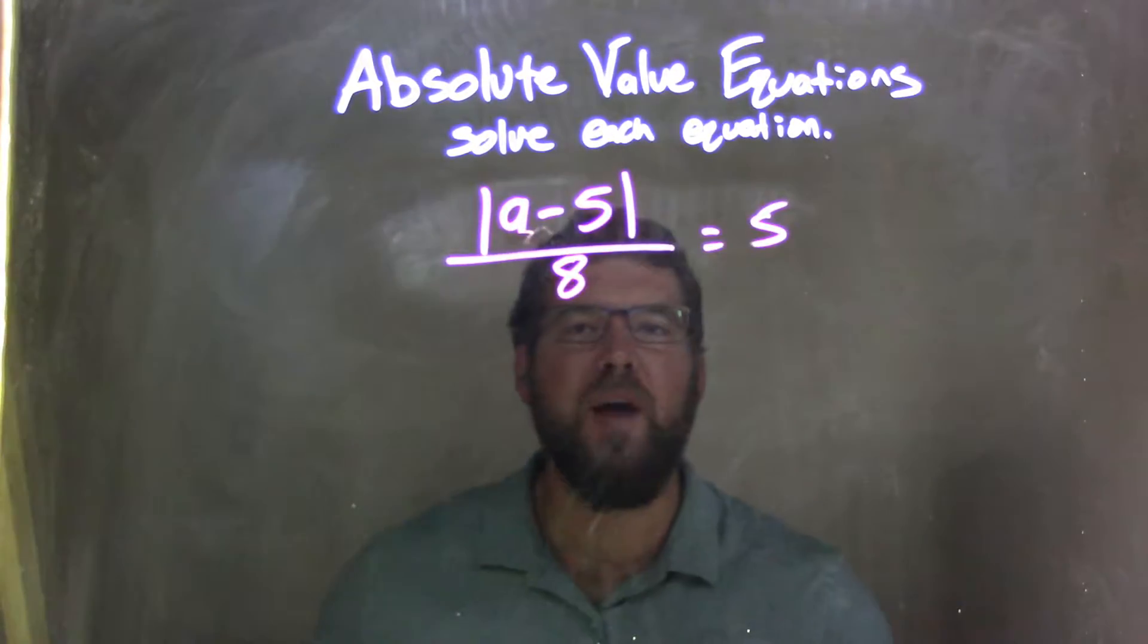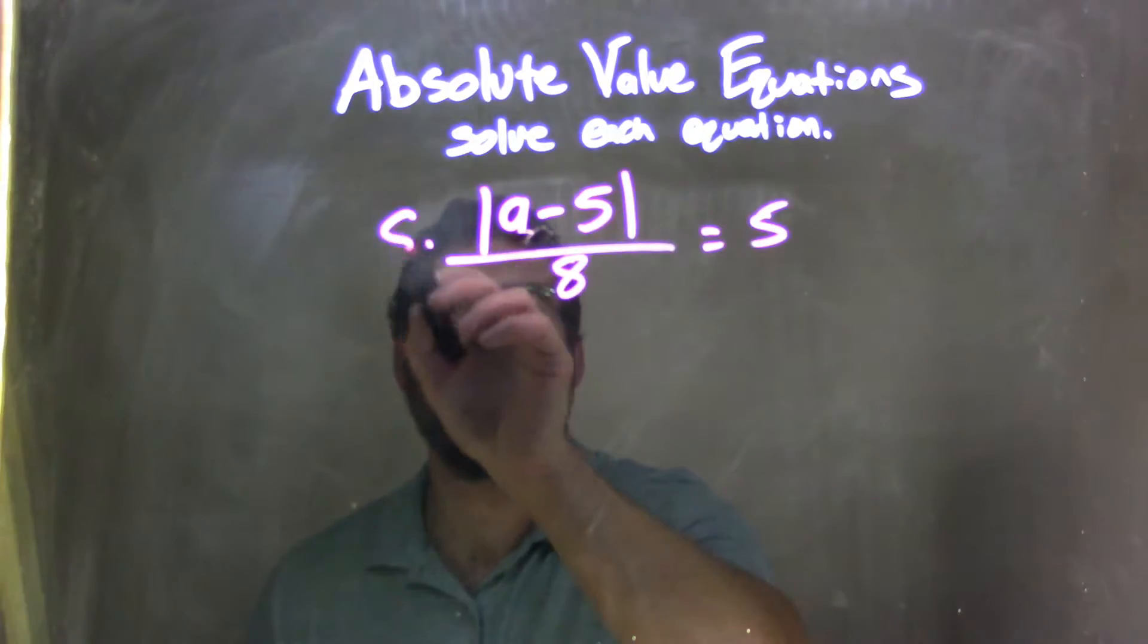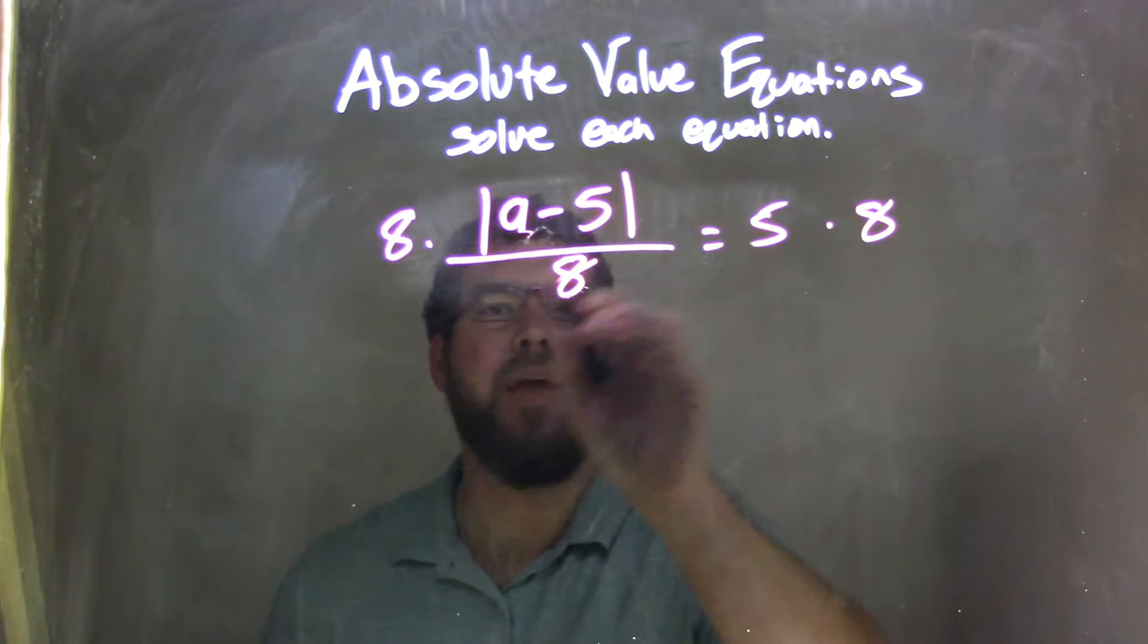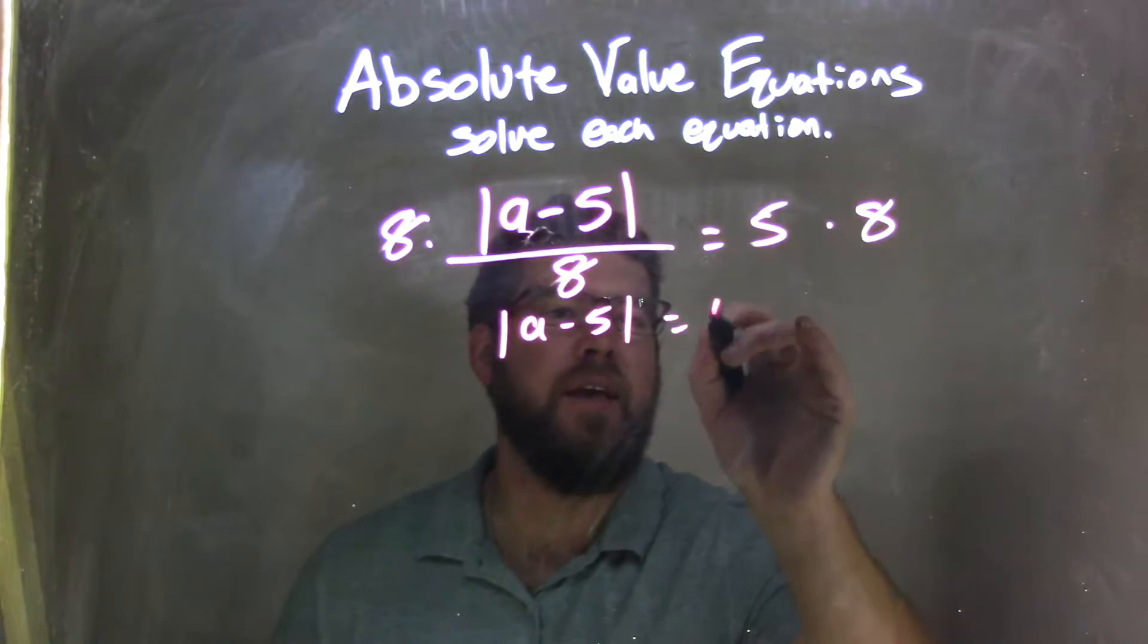There's a few steps here. The first step is to isolate the absolute value, so I'm going to multiply both sides by 8. That cancels out here, leaving me with the absolute value of a minus 5 equals 5 times 8, which is 40.